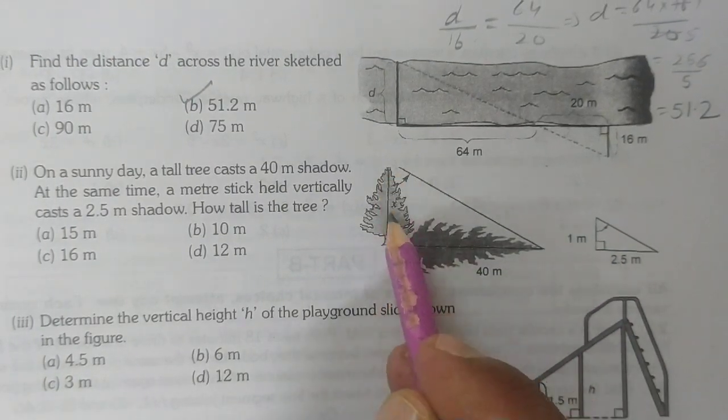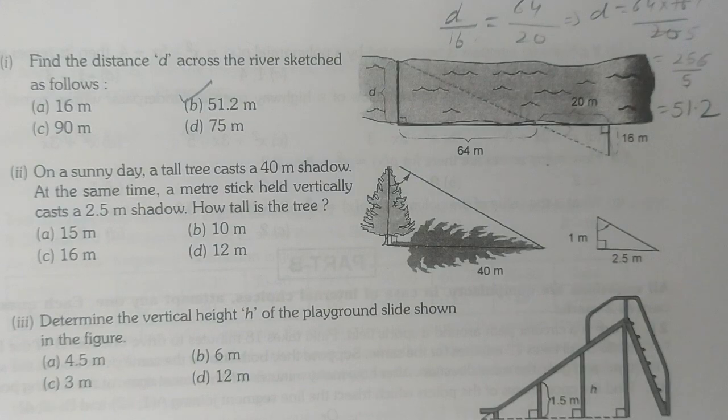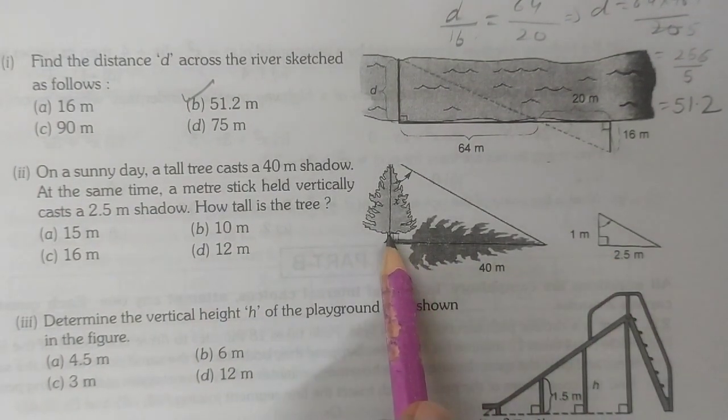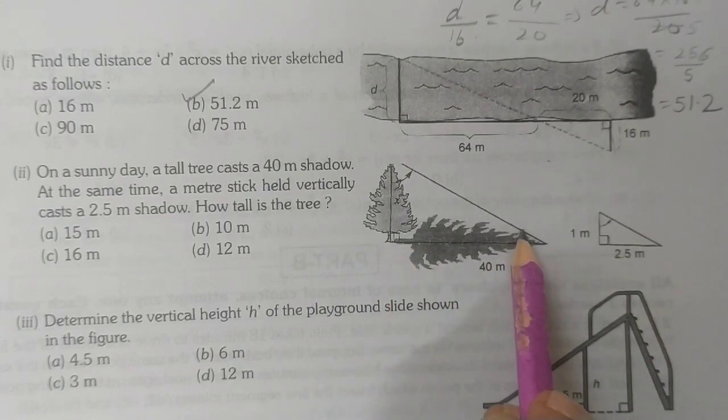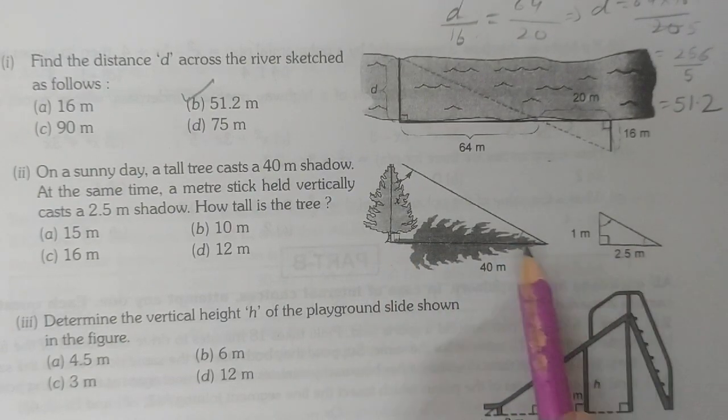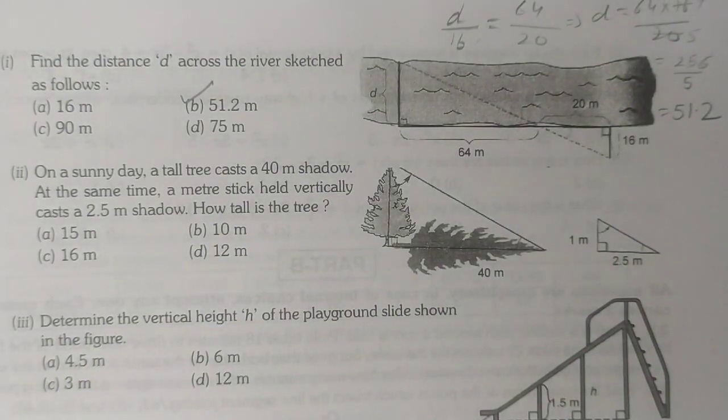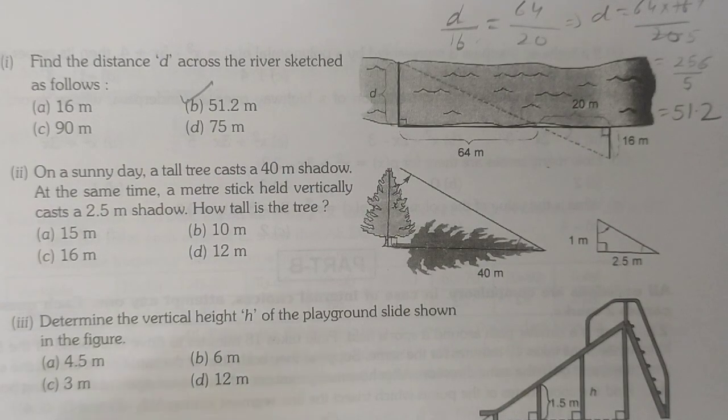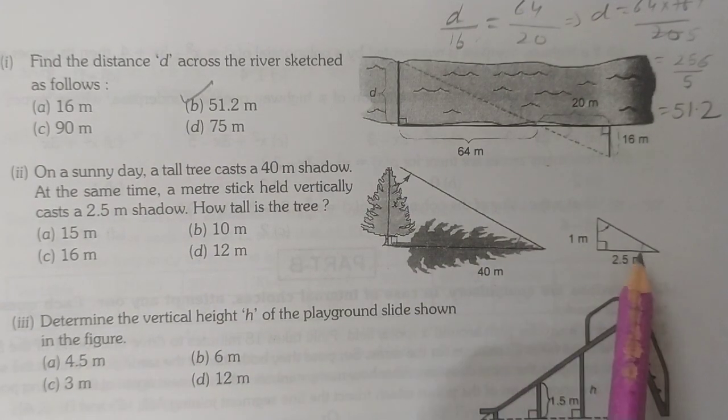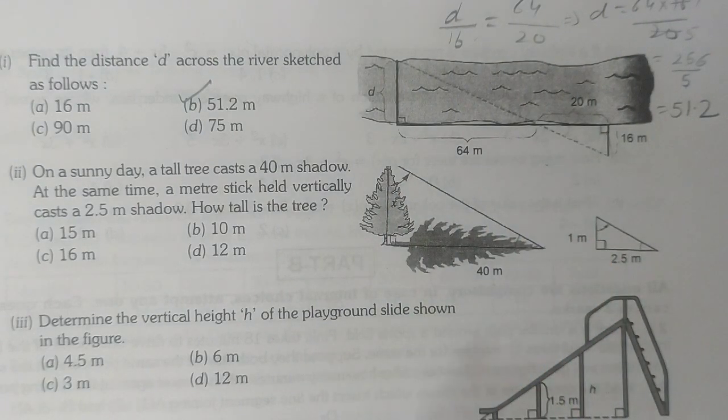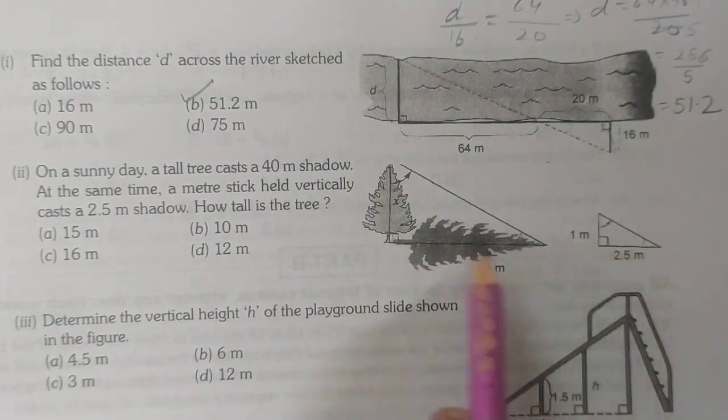We need to find out the height of this tree. Here also these two triangles are similar because this is a 90 degree angle and this is also 90 degrees. This angle and this angle are equal at the same time because these are called angular elevation of the sun. At the same time, the sun makes equal angles with all objects. So these triangles are similar.